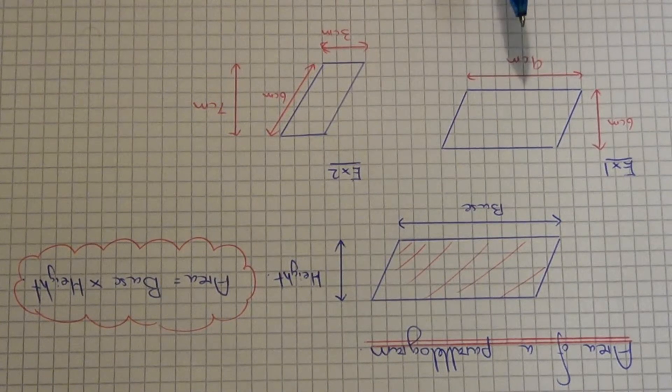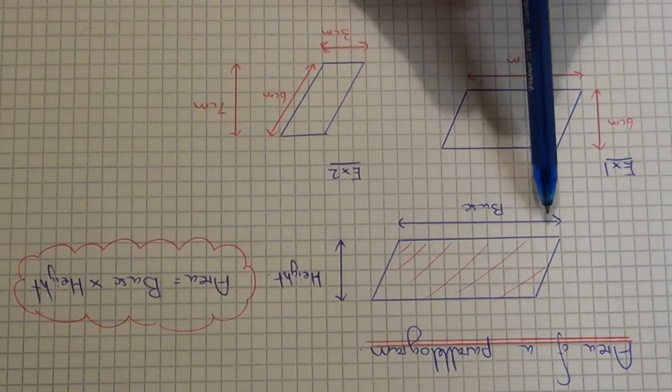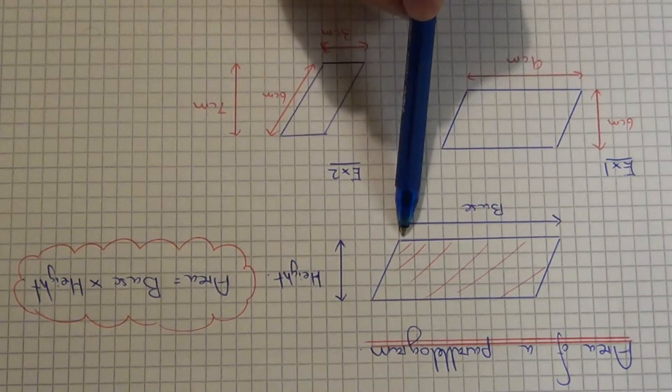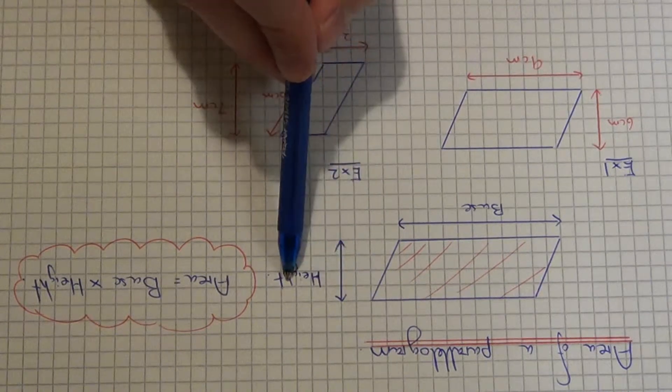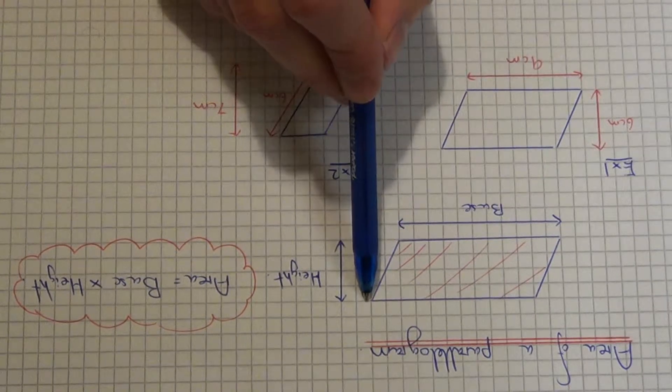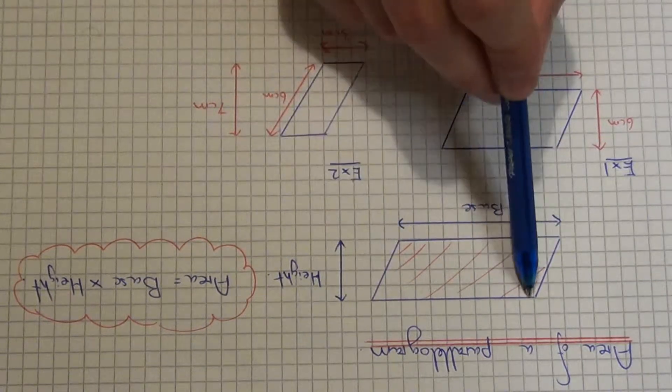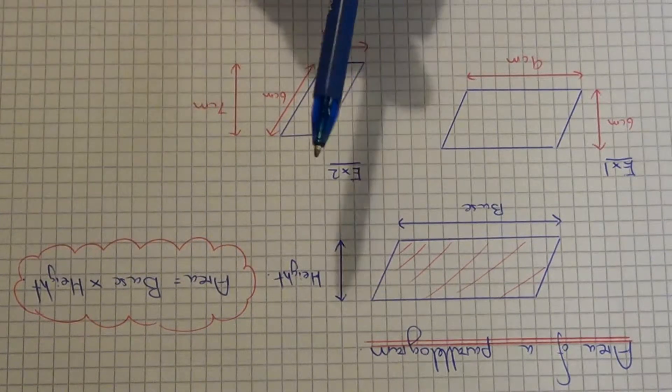Working out the area of a parallelogram is actually quite easy to do because all you need to do is multiply the base length of the parallelogram by the vertical height. Make sure the height is perpendicular to the base. Don't use any of the slanted heights on the parallelogram. So the area equals base times height.